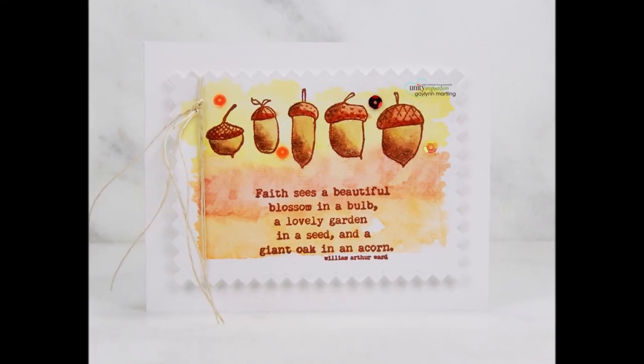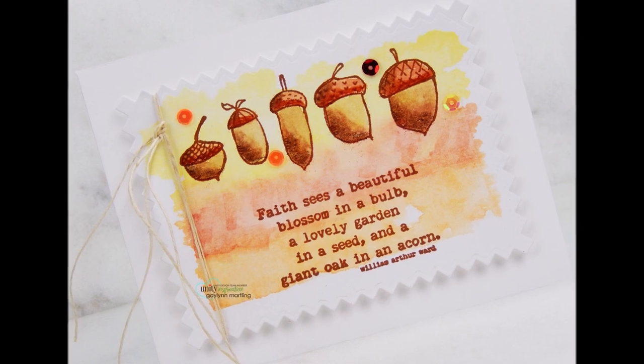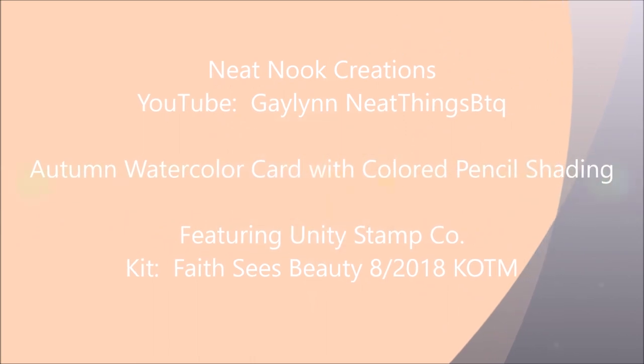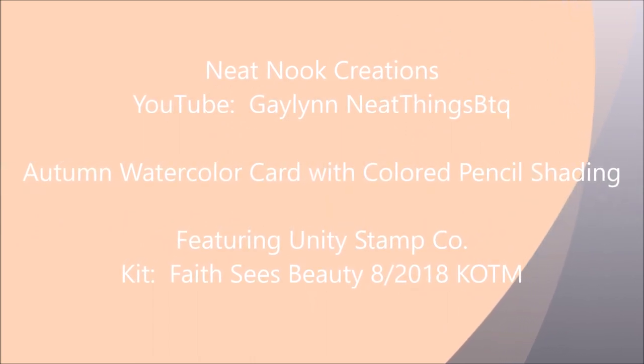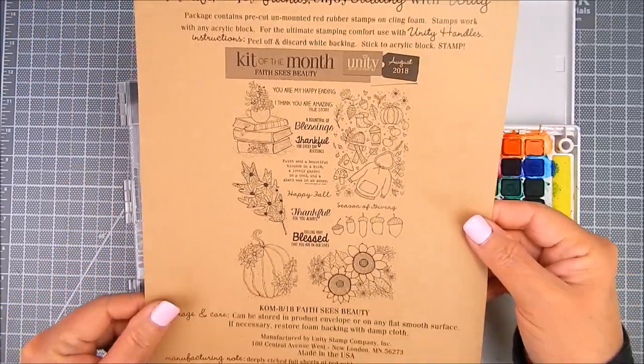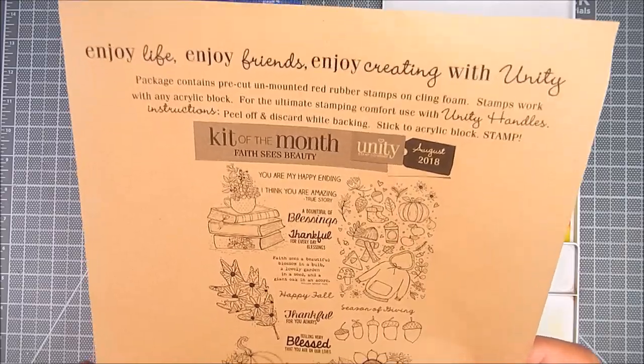Hi everyone, it's Galen again. Today I have an autumn card for you and I am mixing watercolor with a little bit of colored pencil shading. I'm using the Unity Stamp Company kit called Faith Sees Beauty, the August 2018 kit of the month, and I'm using the mini Misti to stamp.